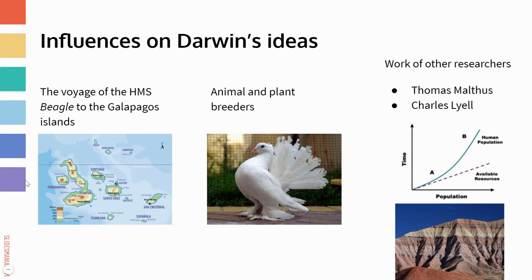Pigeon breeding was really popular at the time Darwin was doing all of this. People would breed really fancy pigeons with special characteristics — you can see this one has feathers that are not a normal pigeon trait. So based on who you're selecting to reproduce, you select individuals that have the trait you want and choose them to reproduce. Then in the offspring, that trait will show up more and more pronouncedly.